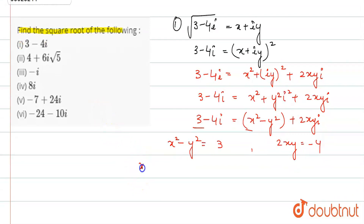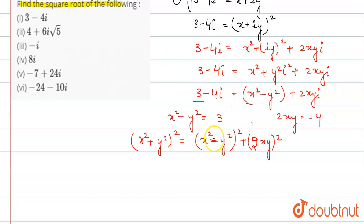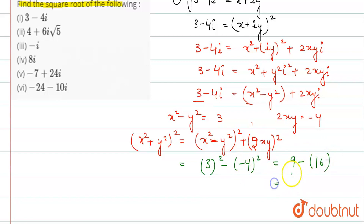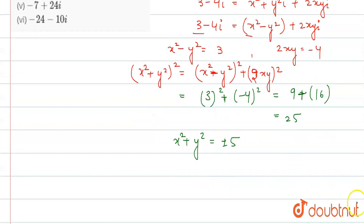Now I know that (x squared plus y squared) squared equals (x squared minus y squared) squared plus (2xy) squared. So substituting: 3 squared plus (minus 4) squared gives 9 plus 16, which is 25. So x squared plus y squared equals plus or minus 5.